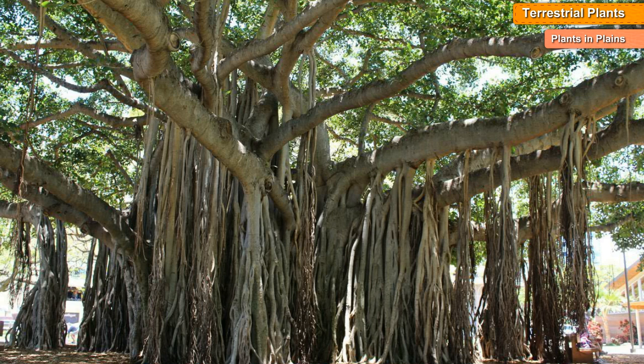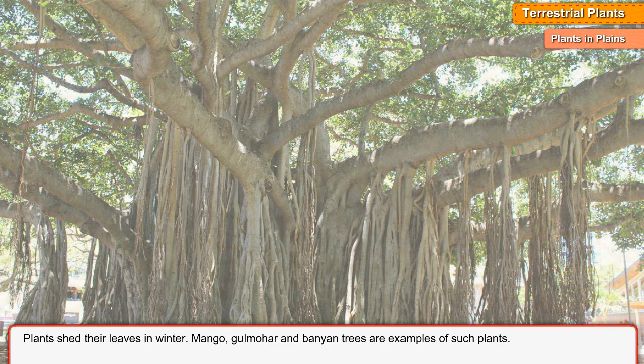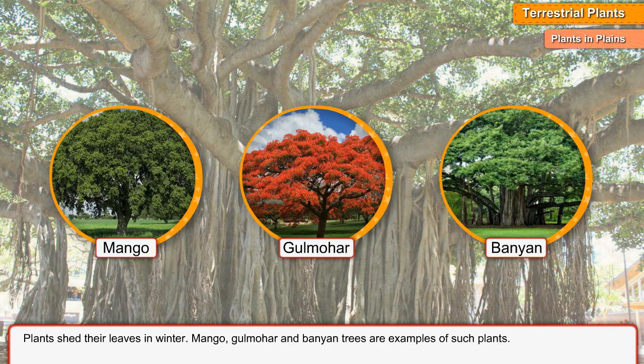Plants in Plains. In plains, the climate is neither too cold nor too hot. The plants that grow in this climate have lots of branches. Plants shed their leaves in winter. Mango, gulmohar, and banyan trees are examples of such plants.